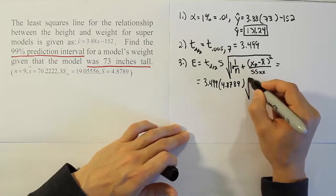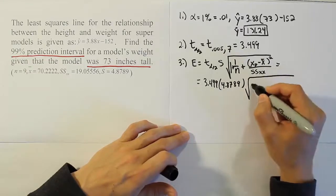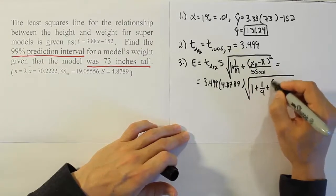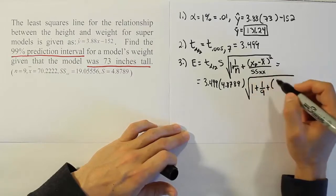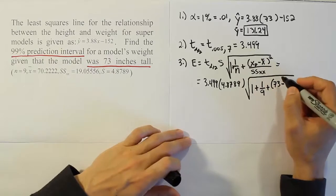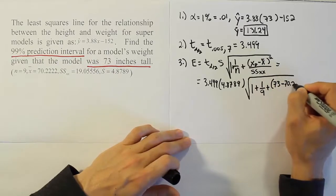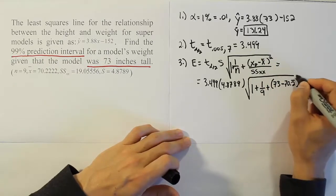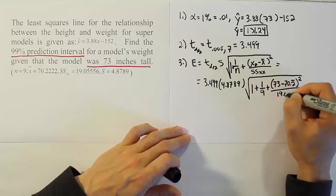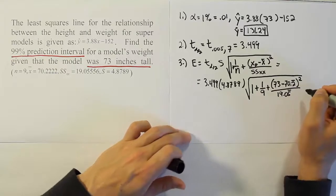Then we're going to have the square root of 1 plus 1 over n. n here is 9 plus x, the predicted x value which is 73 minus the average x value which is 70.2 repeating. Close the parentheses, square it, and then divide by the sum of squares for x which is 19.05 repeating.